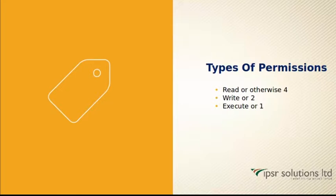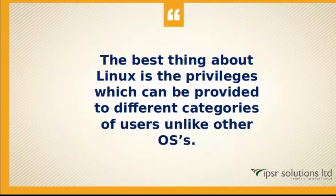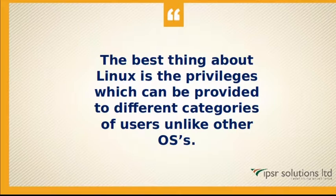Types of permissions: read (r), write (w), and execute (x). This is what makes Linux different from other operating systems — it's because of the privileges provided to files and directories inside the Linux machine, and this is what makes Linux more secure than the rest of the operating systems.